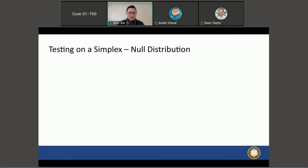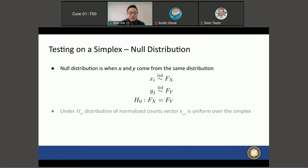Now we've seen the test statistic, what is the null distribution? The null distribution is exactly when the two samples come from the same underlying distribution. When this happens, the distribution of the normalized counts vector is actually uniform over the simplex, and this allows us to compute the p-value under this uniform null hypothesis.